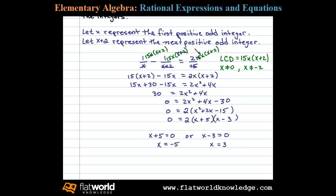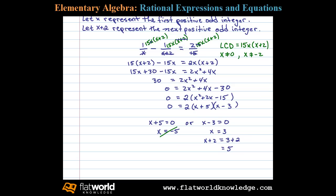Since the question asked for positive odd integers, we'll disregard the negative answer. If 3 is the first odd integer, then the next odd integer is X plus 2, or 3 plus 2, which is 5. The two odd integers are 3 and 5.